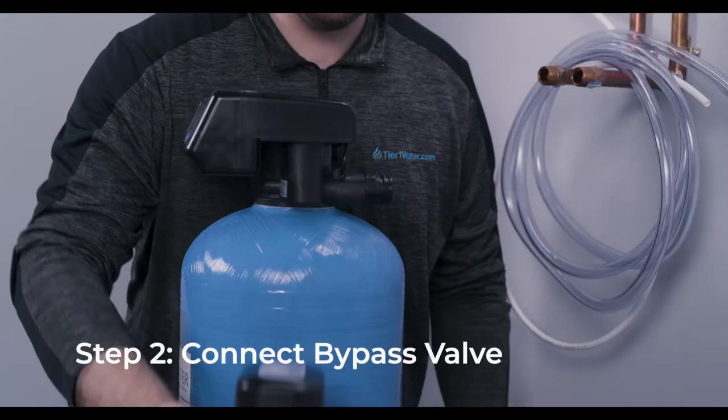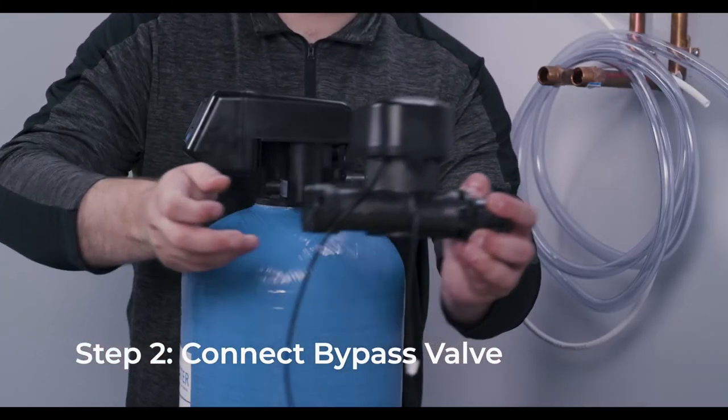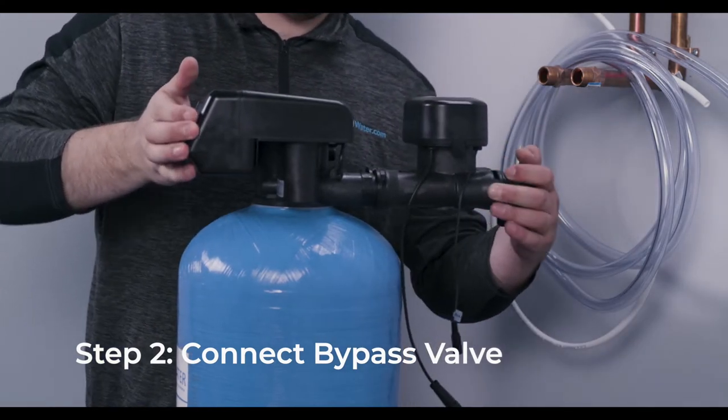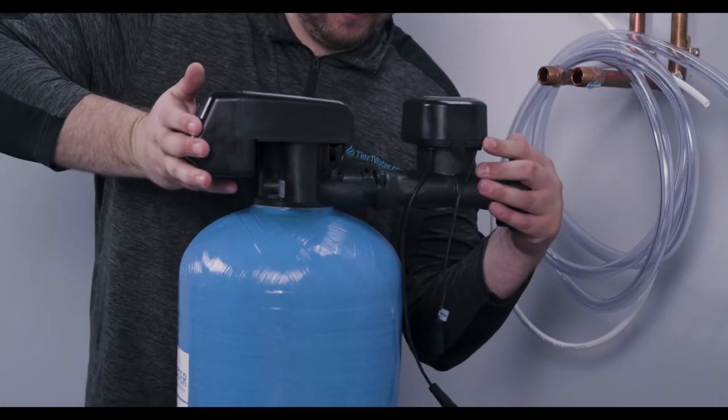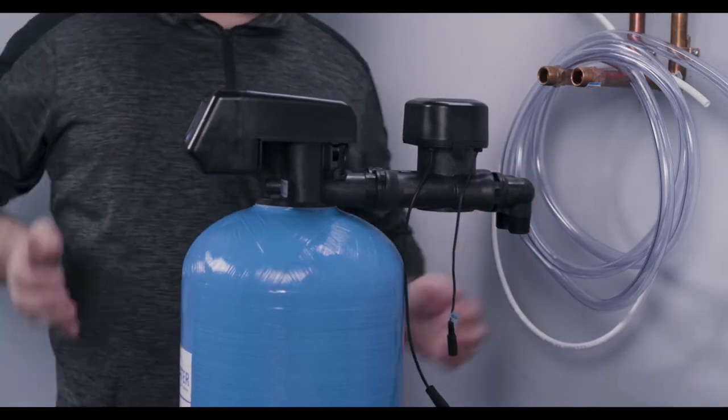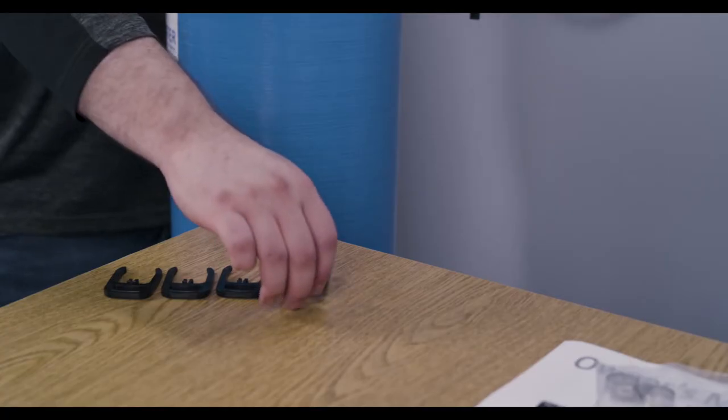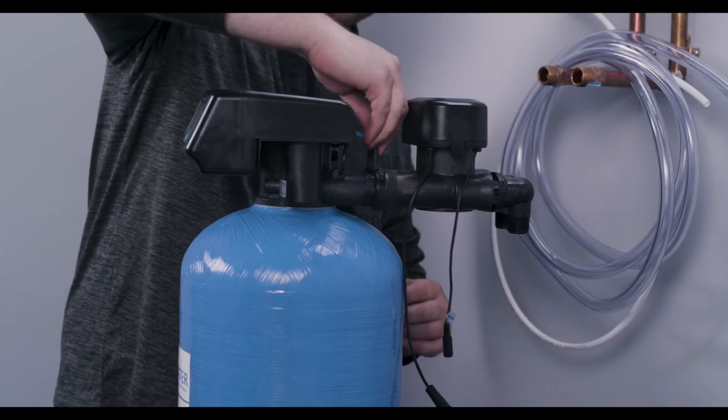Next, locate the bypass valve. Attach the bypass valve to the control valve by firmly pushing the inlet and outlet connections of the bypass onto the control valve. Install two of the plastic clips to secure the bypass.